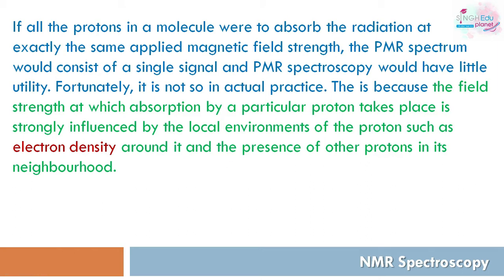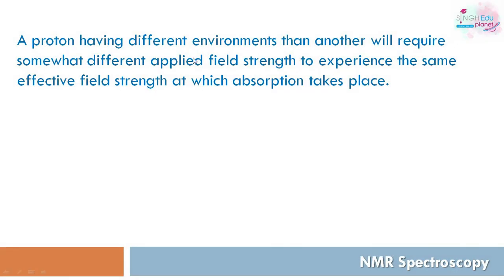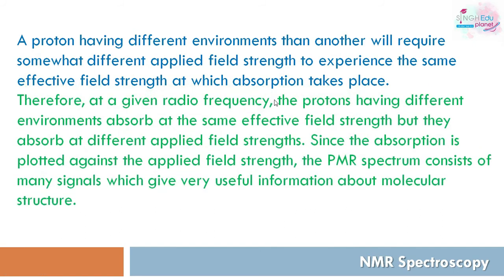These two factors — electron density and neighboring protons — distinguish protons as equivalent or non-equivalent. As a result, the magnetic field a proton actually experiences is not the same as the applied field strength. Rather, it is the applied field strength modified by the local environment of that proton. Protons with different environments will require somewhat different applied field strengths to experience the same effective field strength, so they absorb at different applied field strengths, giving different signals in the NMR spectrum.